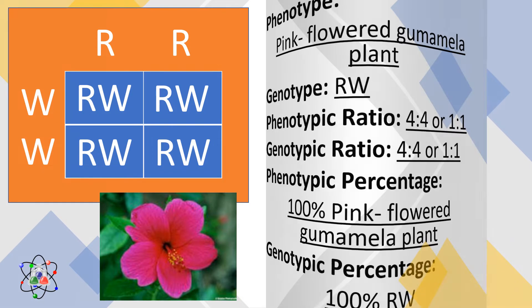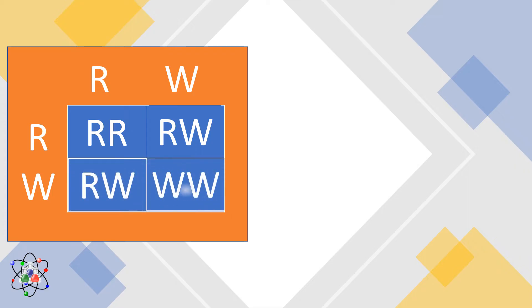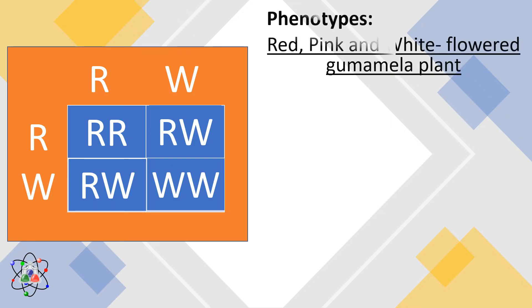Let us have another cross. Suppose the parents are both pink-flowered gumamela plants, represented by Rw. Let us find out the possible offspring by using this Punnett square. By multiplying the alleles, we will have Rr, Rw, Rw, and Ww. Therefore, the phenotypes are red, pink, and white-flowered gumamela plants.